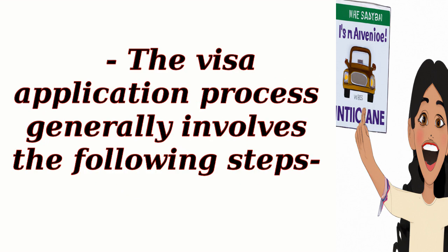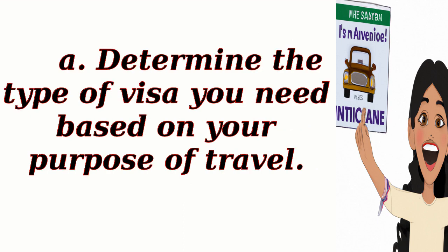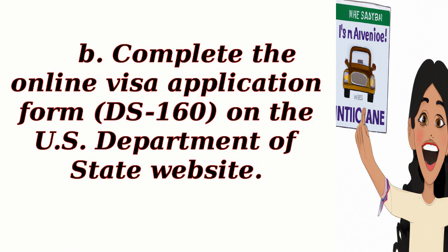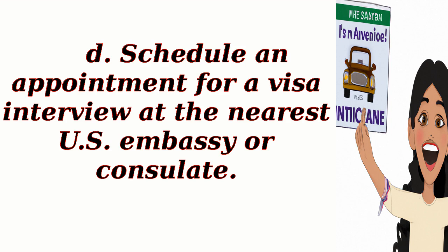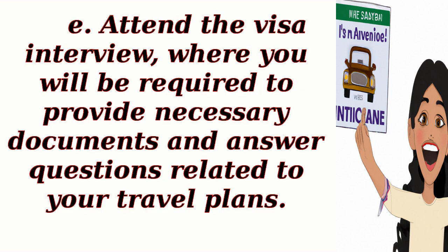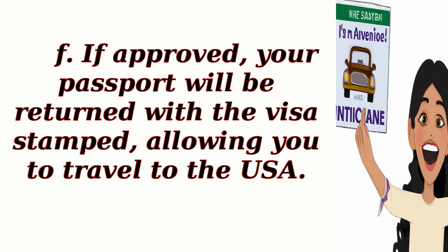The visa application process generally involves the following steps: Determine the type of visa you need based on your purpose of travel. Complete the online visa application form DS-160 on the U.S. Department of State website. Pay the visa application fee. Schedule an appointment for a visa interview at the nearest U.S. Embassy or consulate. Attend the visa interview, where you will be required to provide necessary documents and answer questions related to your travel plans. If approved, your passport will be returned with the visa stamped, allowing you to travel to the USA.